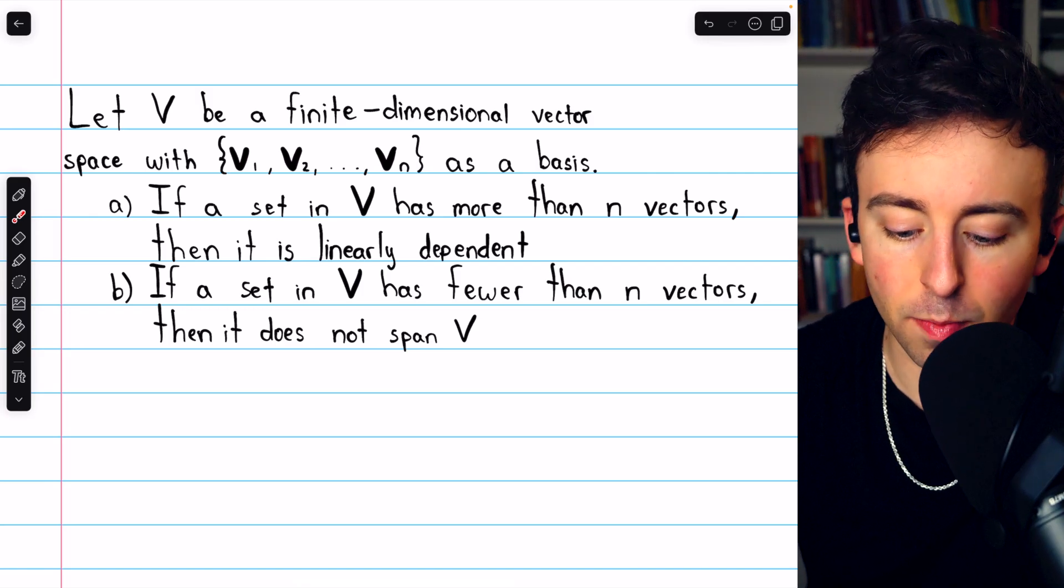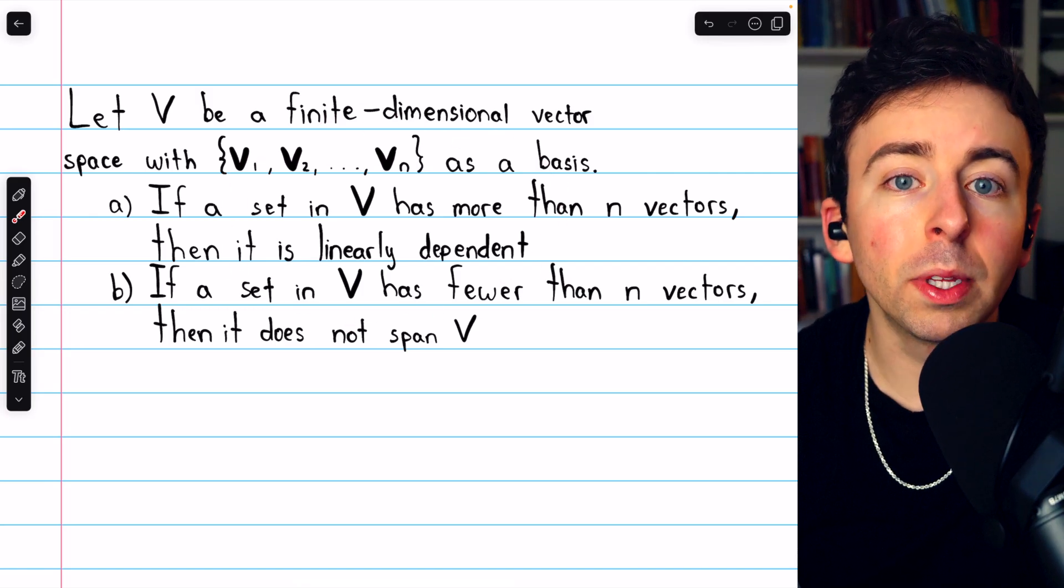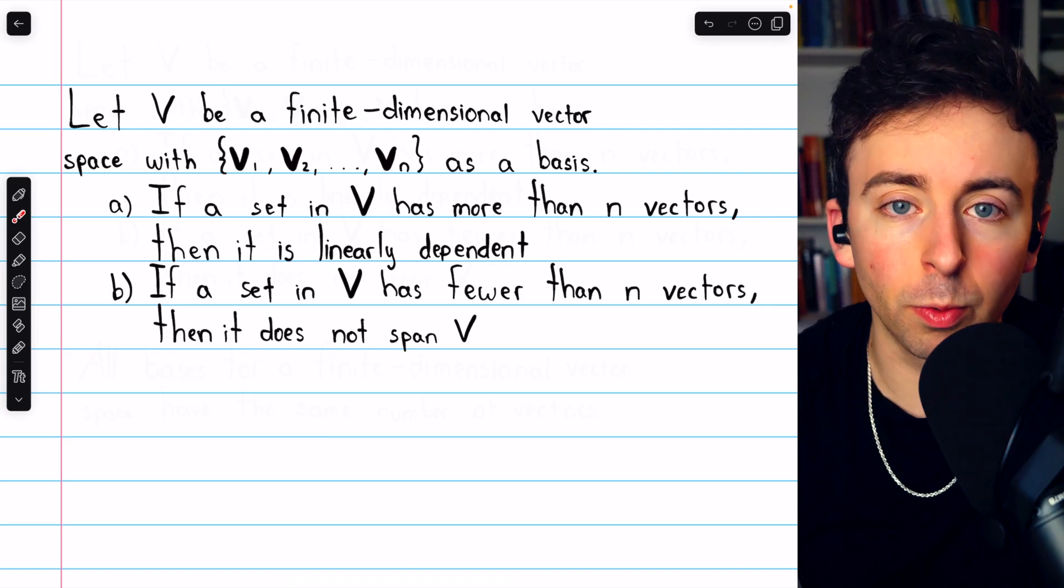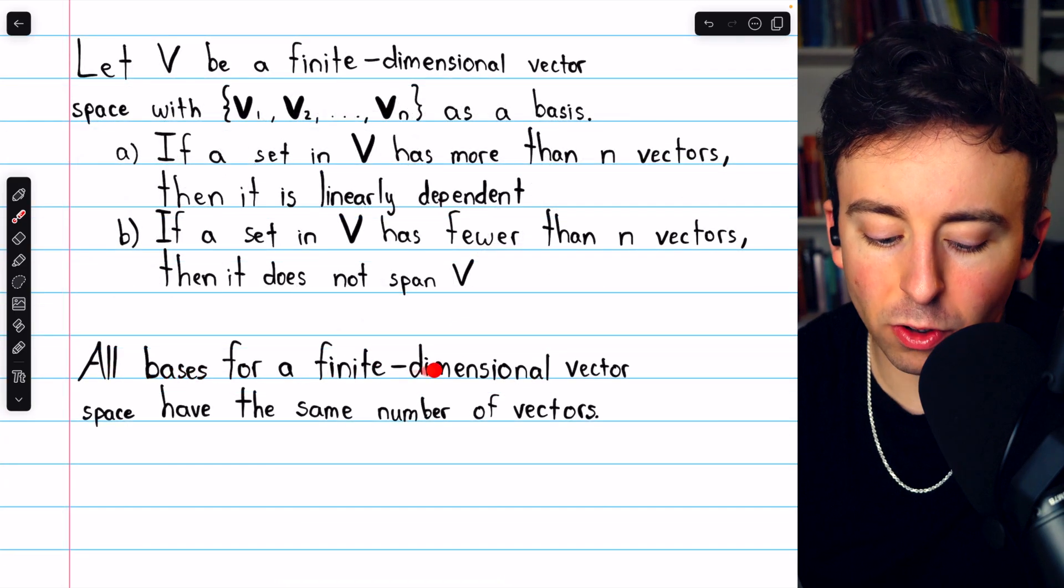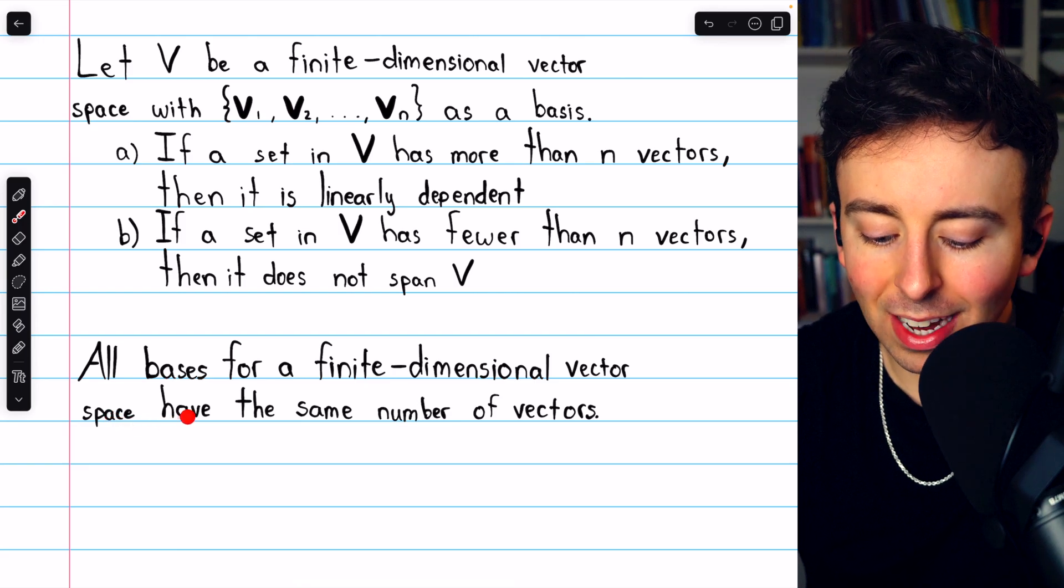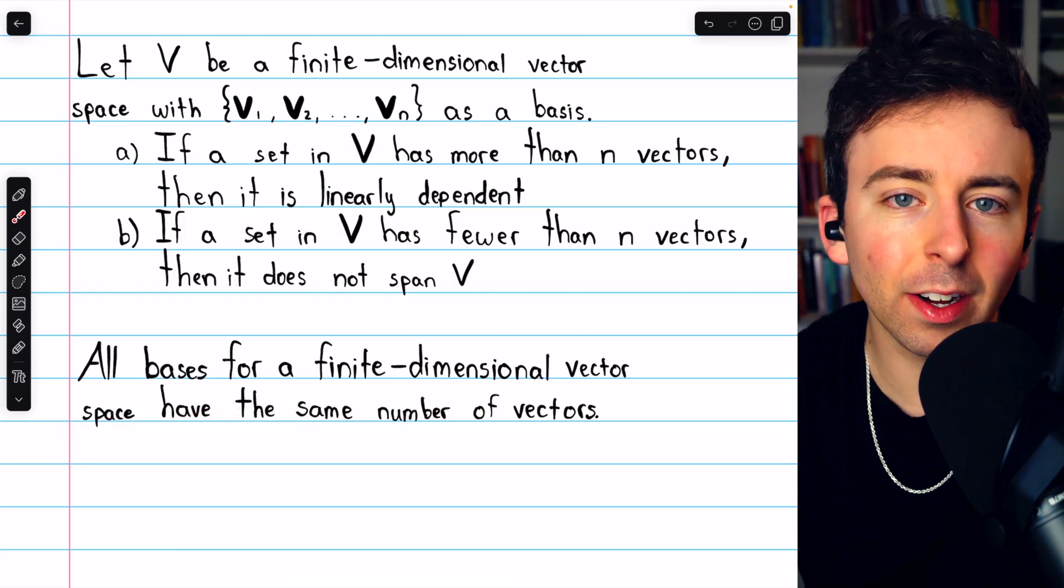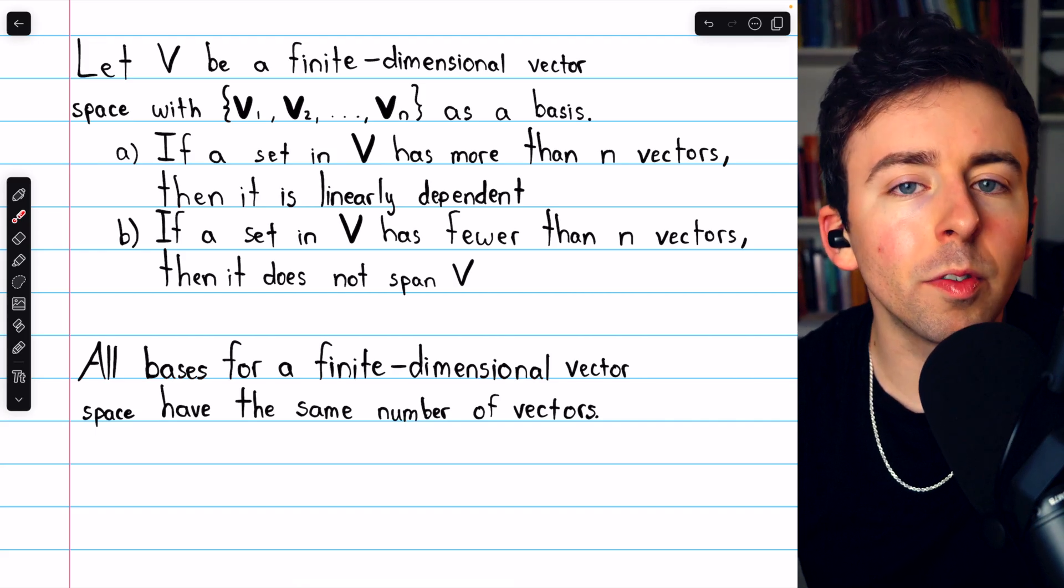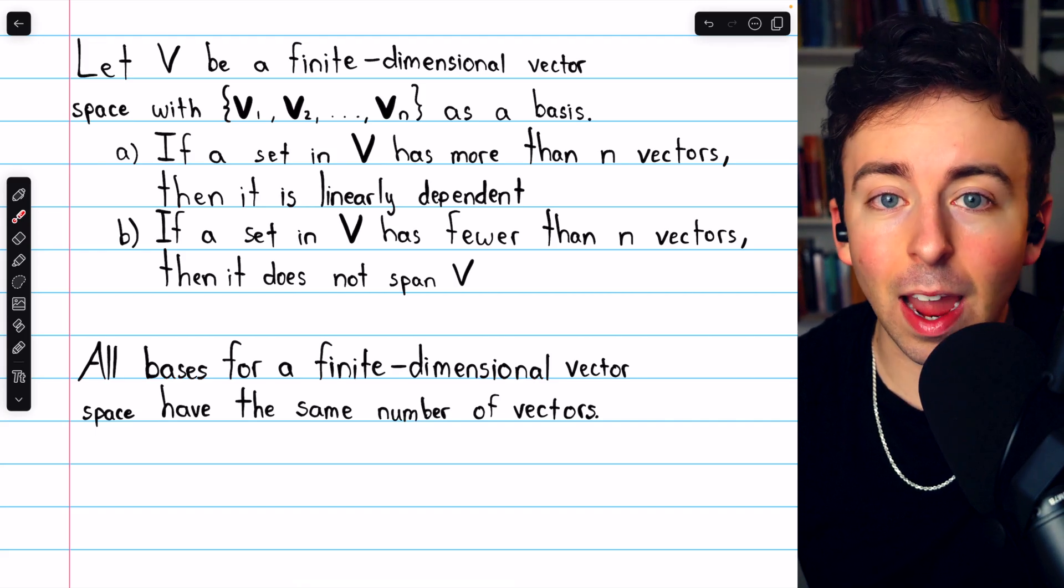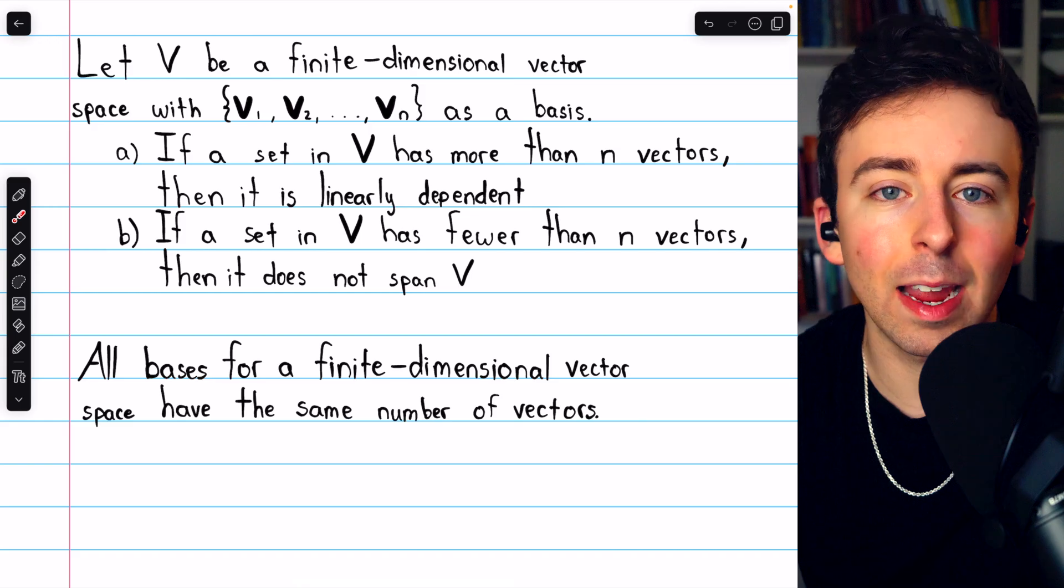I'll leave a link in the description to a lesson proving that these facts are true, but they imply a very important result, and that is that all bases for finite-dimensional vector space must have the same number of vectors. So no, a basis is not unique, but the number of vectors in it is.